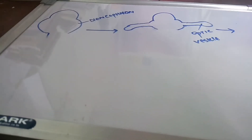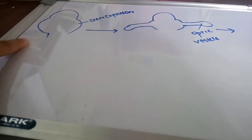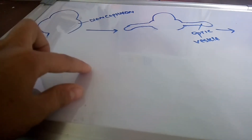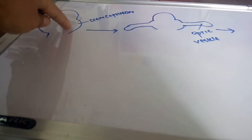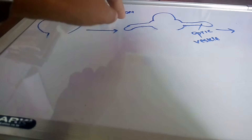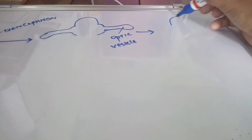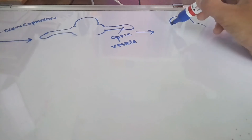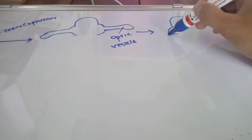Today's lecture is about how the diencephalon develops into optic vesicles, and how those optic vesicles develop into an optic cup.